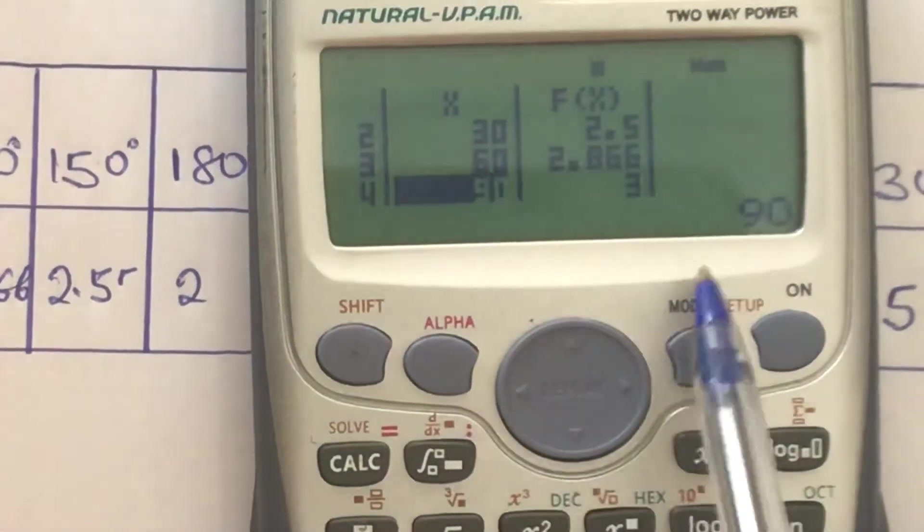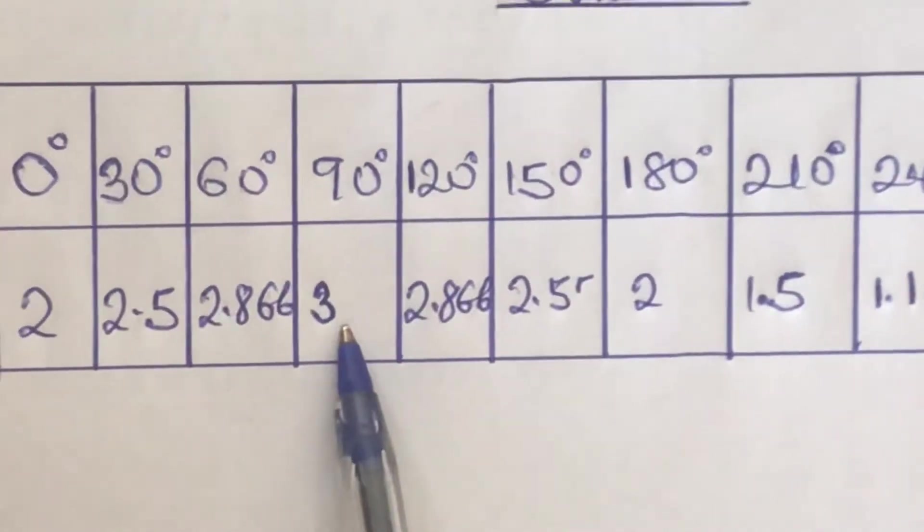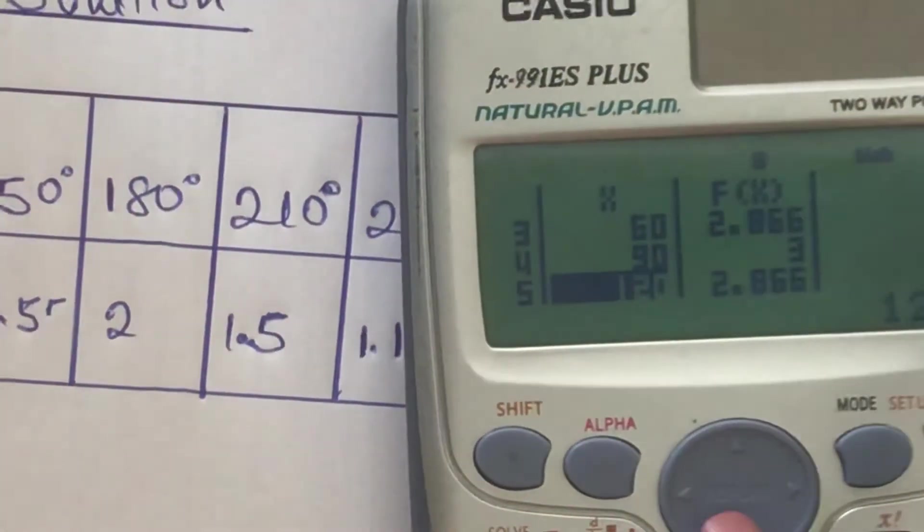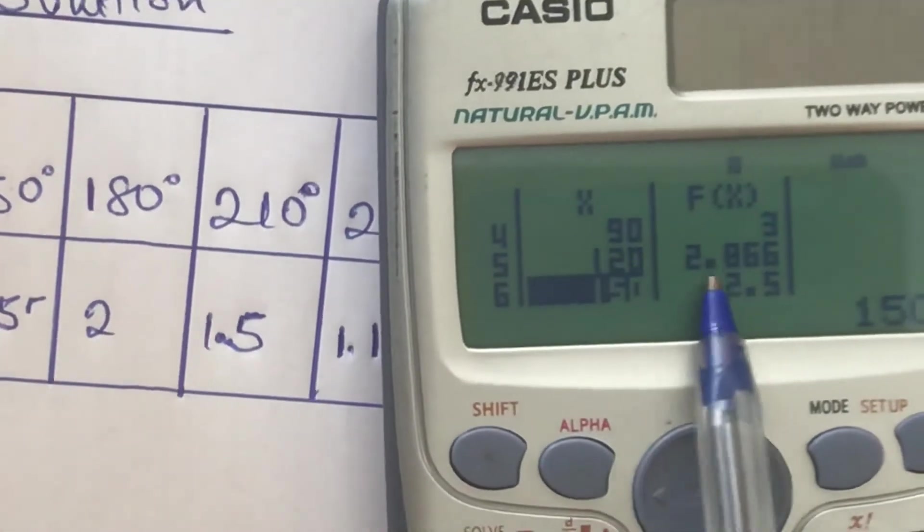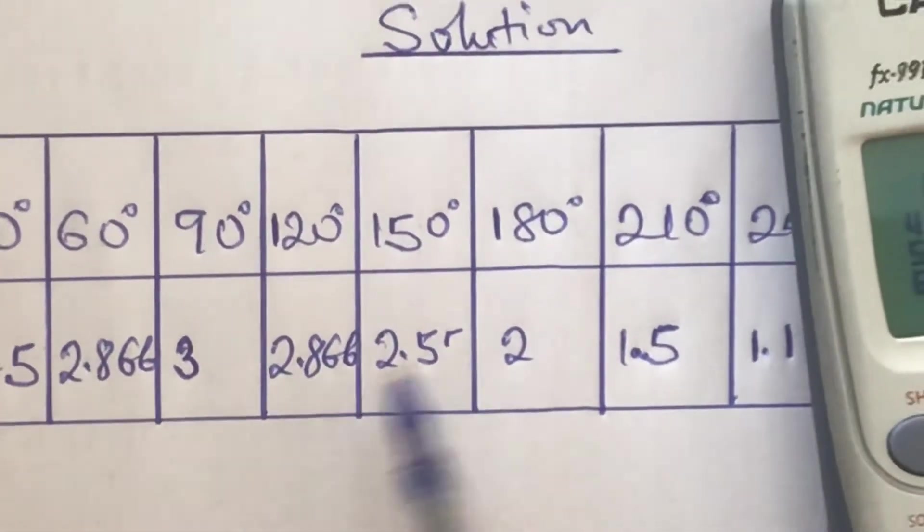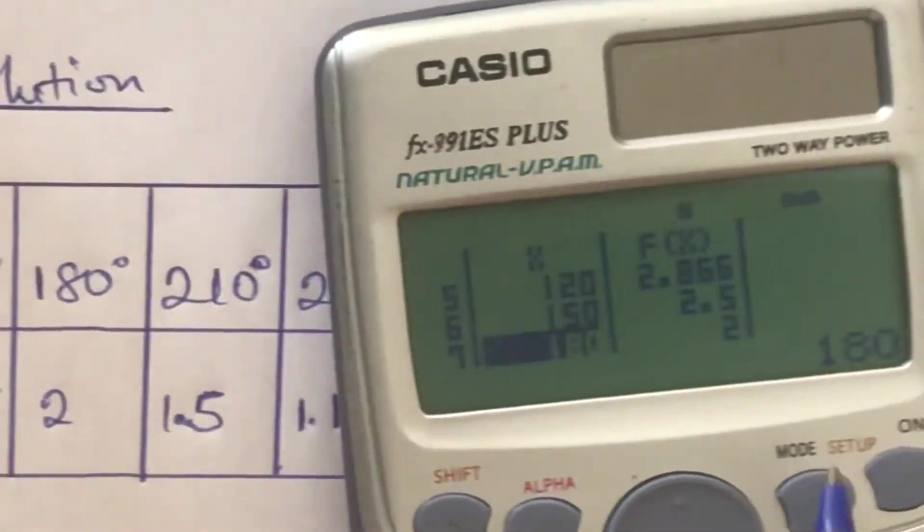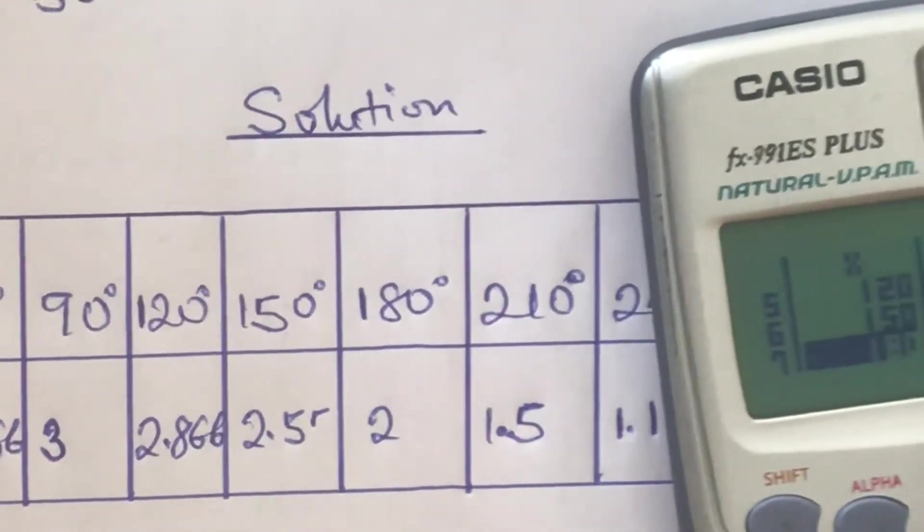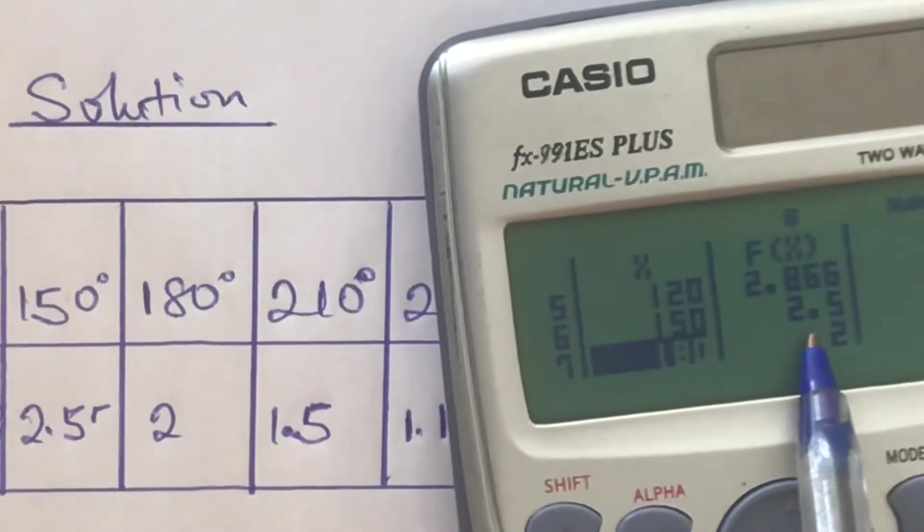For the 90 degrees, we have 3. That is what is reflecting over here. Then 120 degrees, what did we get for it? We have 2.866. That is excellent. 150 degrees, we have 2.5, and that is also showing on our calculator.